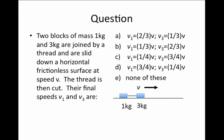Another question which helps us look at inertial systems is if we have two masses, one of one kilogram and another of three kilograms, and they're joined by a thread and slid along a horizontal frictionless surface at speed V. Imagine what would happen when this thread is cut. What would their final speeds, V1 and V3, be equal to?